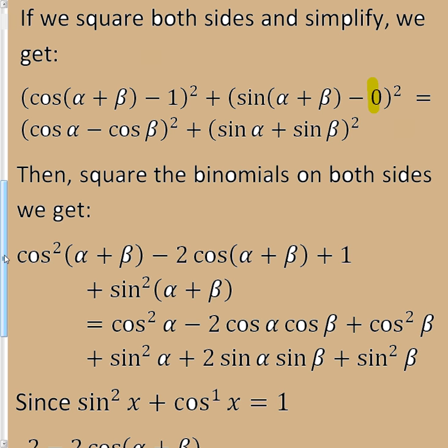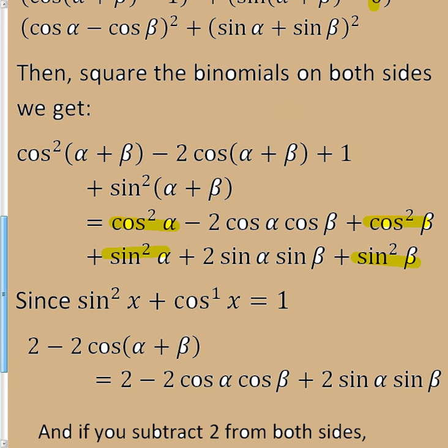However, wherever I see sine squared alpha and cosine squared alpha, and sine squared beta and cosine squared beta, those always equal 1. So we know, since those always equal 1, that the cosine squared alpha and sine squared alpha becomes 1.